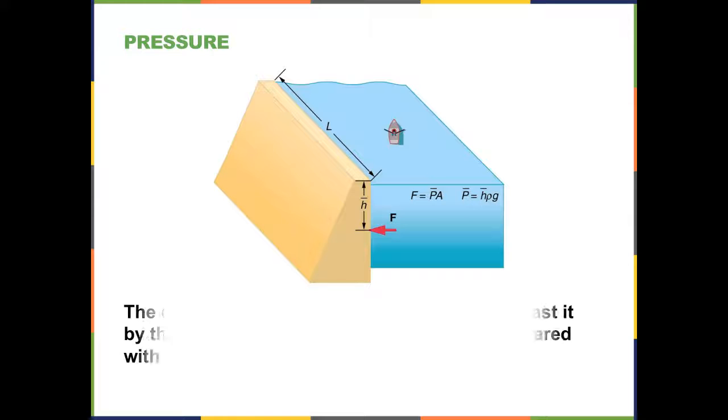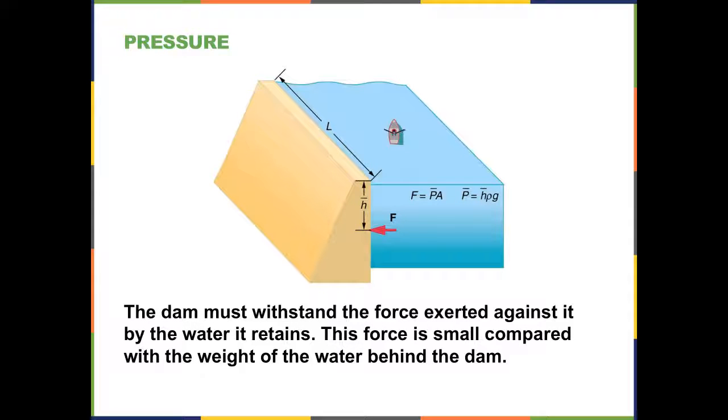So if you have a dam, the dam must withstand the force exerted against it by the water it retains. Now it's kind of interesting when you look at the dam that they are always built this way. That is, the bottom of the dam is much wider than the top of the dam. And it makes sense because if you look at the pressure against the dam at any point, it's going to be equal to the height of the fluid at that point.